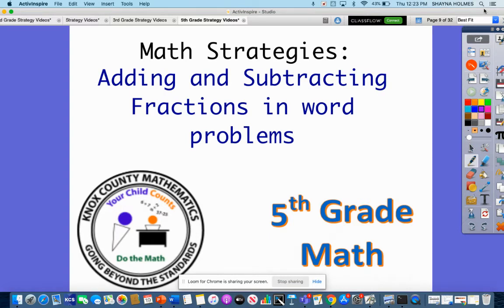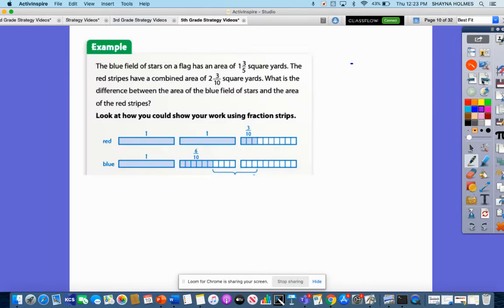Today's math strategy video is on adding and subtracting fractions in word problems. Let's look at our example problem here first. It says the blue field of stars on a flag has an area of 1 and 3 fifths square yards. The red stripes have a combined area of 2 and 3 tenths square yards. What is the difference between the area of the blue field of stars and the area of red stripes?